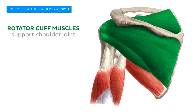Flipping over to the posterior aspect, the second member of the rotator cuff is the infraspinatus muscle, which originates from the infraspinous fossa of the scapula. It extends laterally where it has its distal attachment along the posterior aspect of the greater tubercle of the humerus. Moving inferiorly, we find the third member of the rotator cuff, the teres minor muscle. It originates from the infraspinous fossa and lateral border of the scapula and inserts just distal to the infraspinatus on the posterior aspect of the greater tubercle of the humerus.